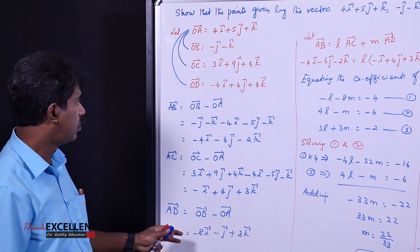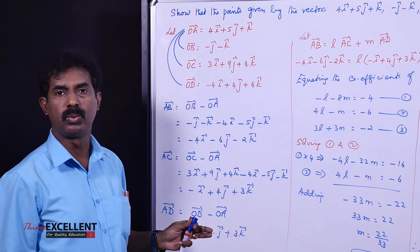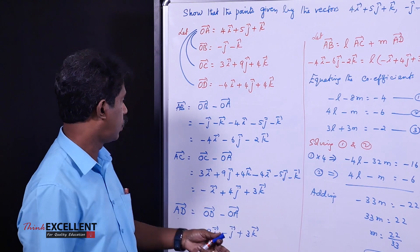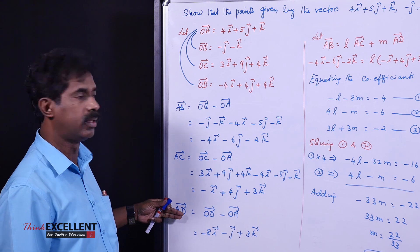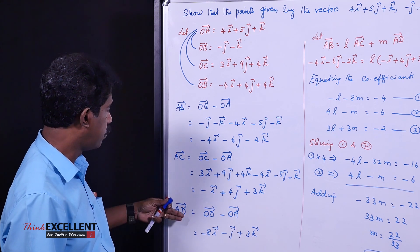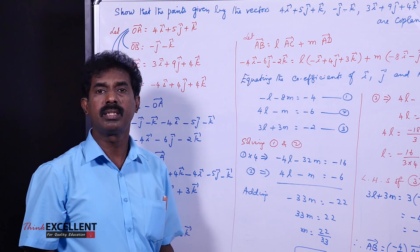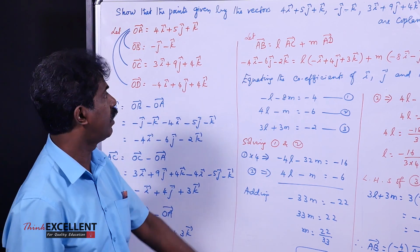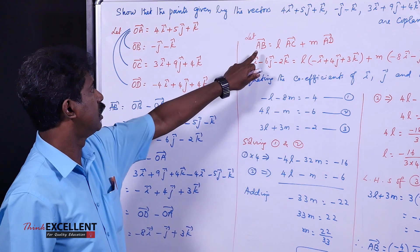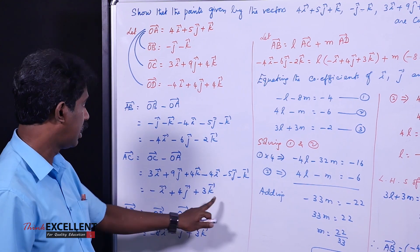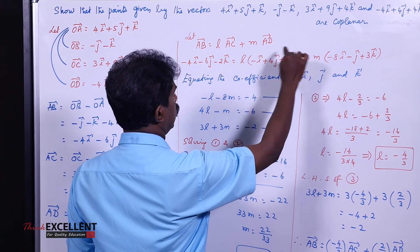The condition for coplanarity is that one vector is a linear combination of the other two. That means AB vector equals L times AC vector plus M times AD vector. We want to see whether this relation exists — can we find some L and M satisfying this equation? Substitute the values of AB, AC, and AD vectors.